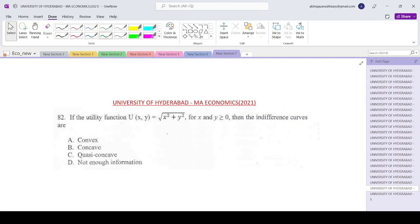So now moving on to question number 82 of the University of Hyderabad paper, which says that if the utility function is square root over x square plus y square for x and y greater than 0, then the indifference curves are convex, concave, quasi-concave, not enough information.